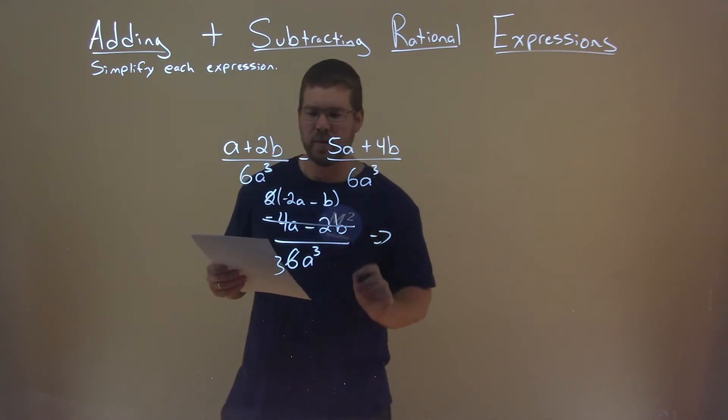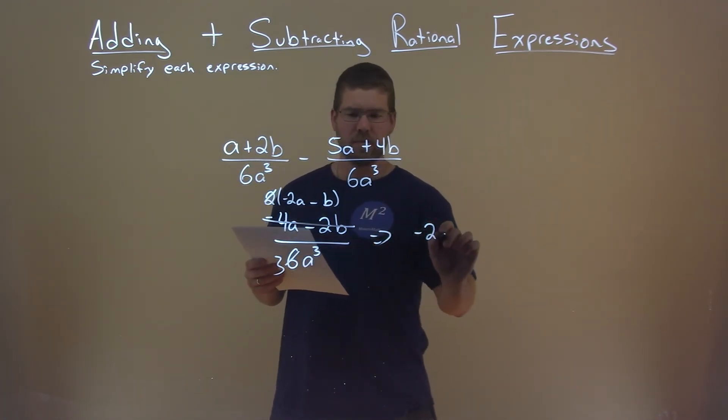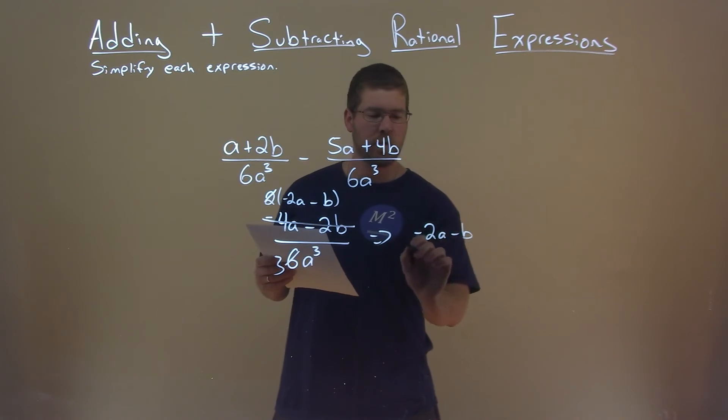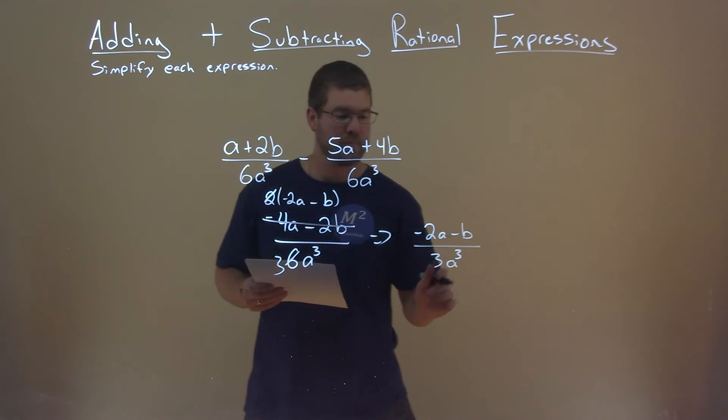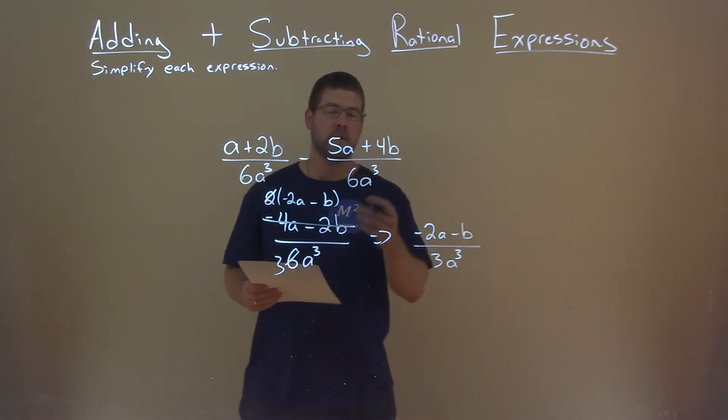So what does that come out to be? Well, we're left with negative 2a minus b in the numerator, and the denominator is just 3a to the third power. And so that is our final answer.